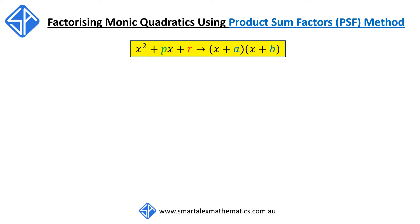In this video, we're going to look at how to factorise monic quadratics using the product sum factors, or PSF method. A monic quadratic is an expression of the form x squared plus px plus r, where the coefficient of x squared is equal to 1. To factorise it, we want to express it in the form of (x plus a) times (x plus b).